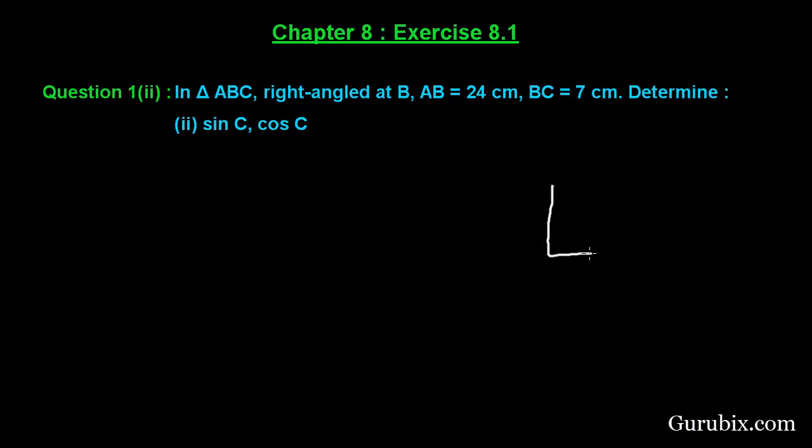Let us draw a right angled triangle, which is right angled at B. Here we have A and here we have C. This is given 24 cm, this is given 7 cm.